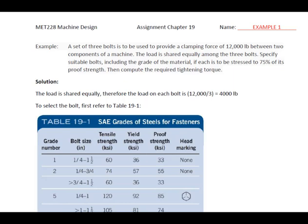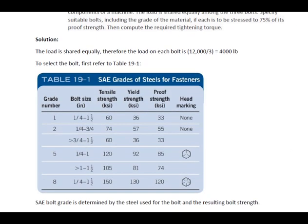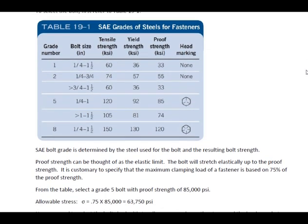Next, we're going to look at Table 19.1. We're going to talk about the SAE grades for bolts. Looking at Table 19.1, the SAE bolt grade is determined by the steel that's used for the bolt and the resulting bolt strength. We talked a little bit about this in the movie.